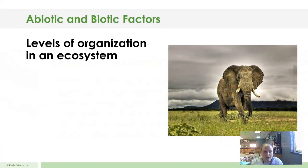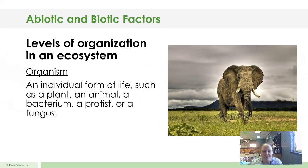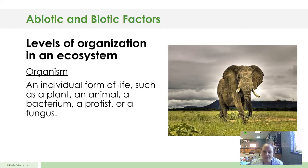Let's get started. The levels of organization in an ecosystem — the first is organism. An organism is an individual form of life such as a plant, an animal, a bacterium, a protist, or a fungus. So any of those fall into that category when we say organisms.